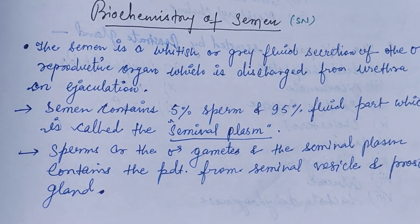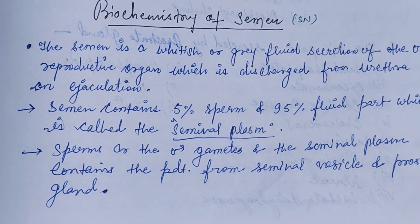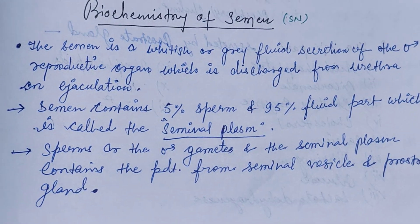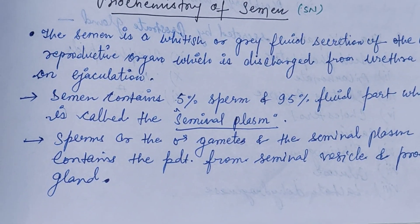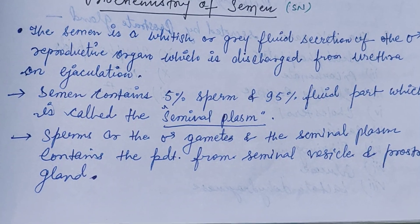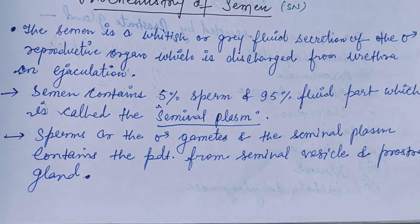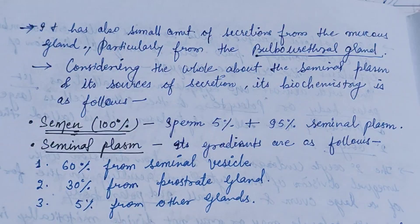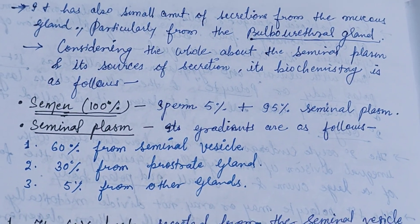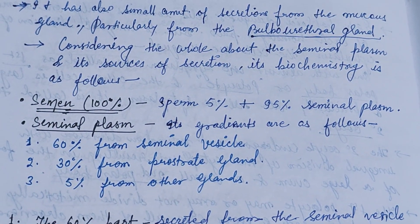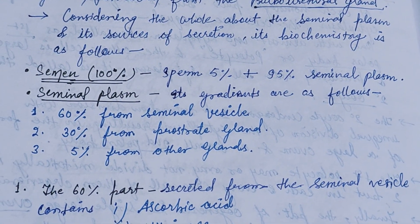In this video we'll see the biochemistry of the semen. Semen is a whitish or gray fluid secretion of the male reproductive organ which is discharged from the urethra on ejaculation. It contains 5% sperm and 95% fluid part which is called the seminal plasma. It also has a small amount of secretion from the mucous gland, particularly from the bulbourethral gland.